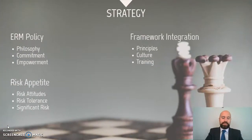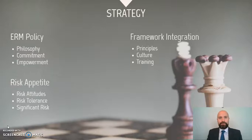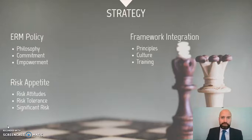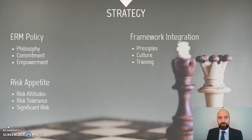The next element within the framework is the strategy. The risk management strategy contains the policy. The enterprise risk management policy is a key and central element in every risk management framework. The policy contains the risk management philosophy, the commitment towards implementing the standard and also the empowerment to those taking part in it. Another key concept within the strategy is the risk appetite, which is central in executing the risk management process and contains details on the risk attitude — whether the organization is risk averse or risk aggressive — the risk tolerance and how to identify and decide whether a risk is to become significant or not. Finally, within the strategy, we have details on how we are going to integrate the framework: the principles behind the initiative, the culture we are going to implement and how we can measure that culture, and which training initiatives need to be put in place.